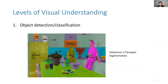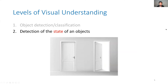So what should we do? Let's talk about the different levels of understanding visual data. Currently, we can detect objects — we can understand the boundaries of objects, separate them from each other, and even count them. This is from Detectron, which is one of the good methods in object detection.